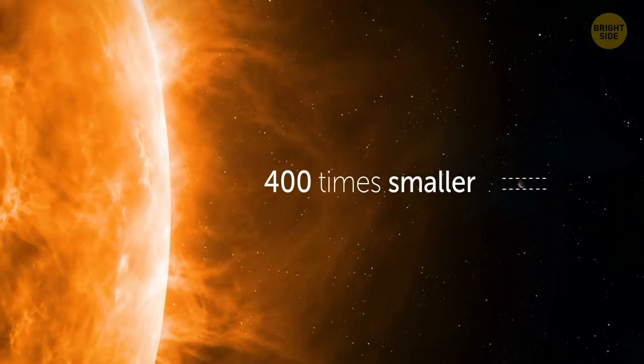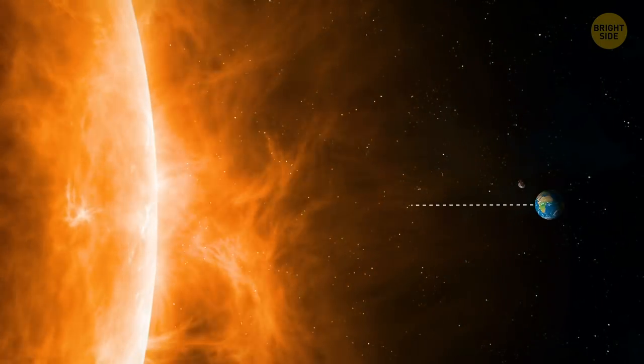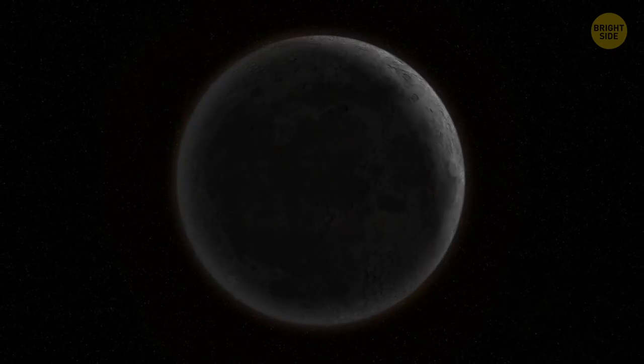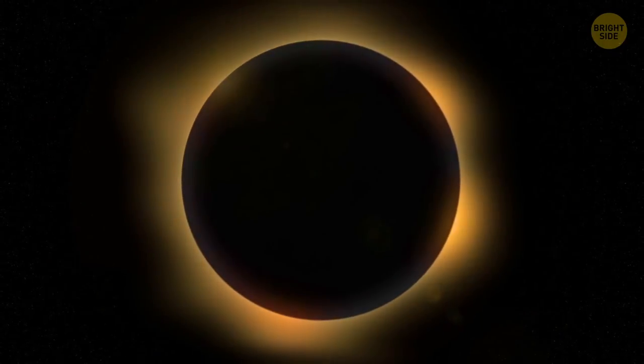The Moon is 400 times smaller than the Sun, and the Earth is 400 times further from the Moon than the Sun. That's why they appear to be the same size during an eclipse.